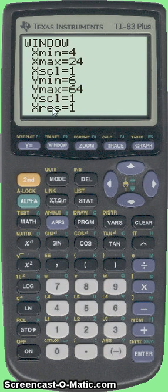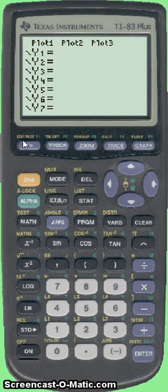We've changed the window, but now we need to turn the points on. And for that, we need to go to this screen, the y equals screen, and go up and press enter. And now you can see plot 1 is highlighted, okay? So that would be a scatter plot, okay?